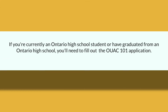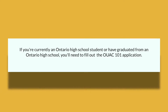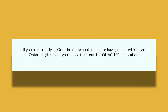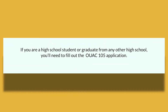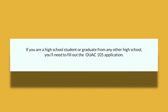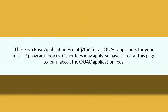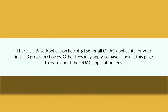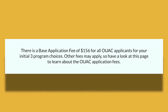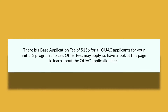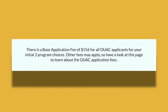If you are currently an Ontario high school student or have graduated from an Ontario high school, you will need to fill out the OUAC 101 application. If you are a high school student or graduate from any other high school, you will need to fill out the OUAC 105 application. There is a base application fee of $156 Canadian for all OUAC applicants for your initial three programs of choice. Other fees may apply, so have a look at the page to learn about the OUAC application fees.